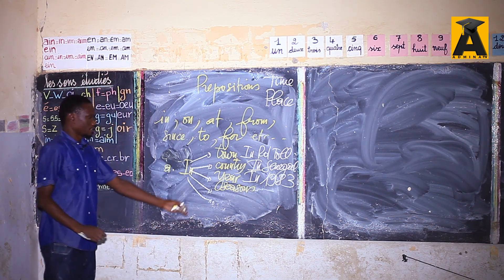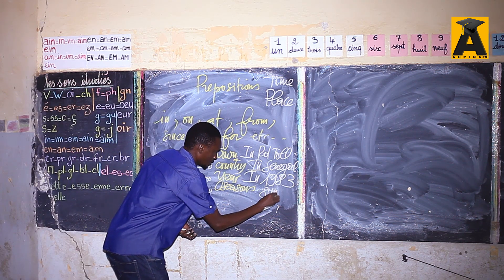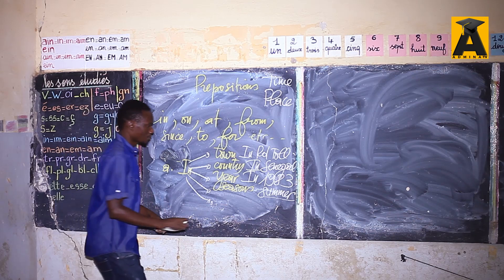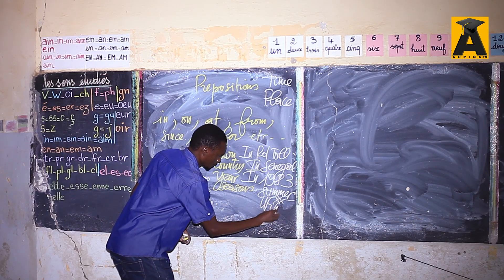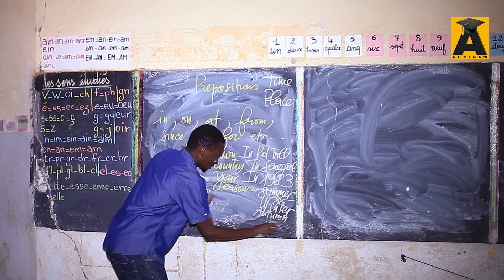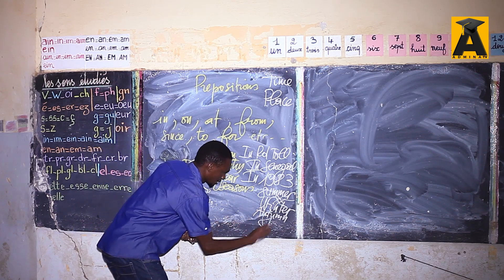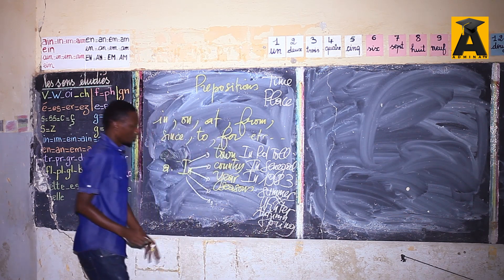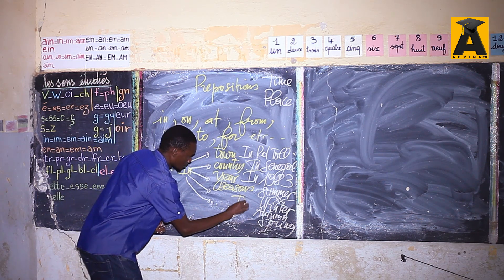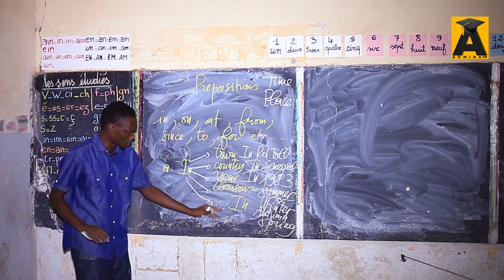In Europe, you have four seasons: summer, winter, autumn — called 'fall' by Americans — and spring. When you use seasons in your writing or speaking, you say 'in summer,' 'in winter,' 'in autumn.' You don't say 'at summer' or similar. The correct preposition for seasons is 'in.'